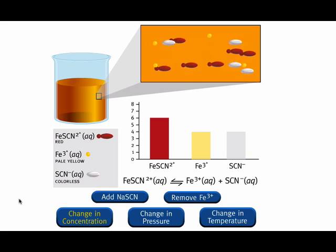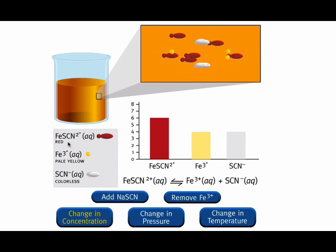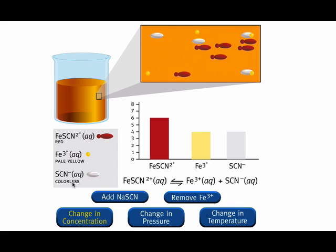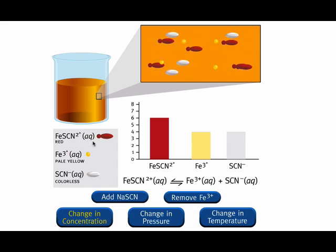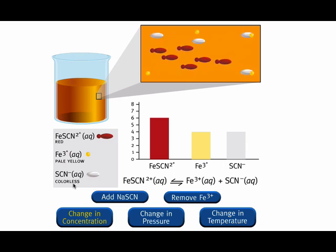Iron-3-thiocyanate (FeSCN3) dissolves readily in water to give a red solution. The red color is due to the presence of hydrated iron-thiocyanate ions, FeSCN2+. The equilibrium between undissociated iron-thiocyanate ions, iron-3-plus ions, and thiocyanate ions (SCN-) is given by this chemical equation: FeSCN2+ (aq), which is red, in equilibrium with Fe3+ ions (pale yellow) plus SCN- (aq), which is colorless.